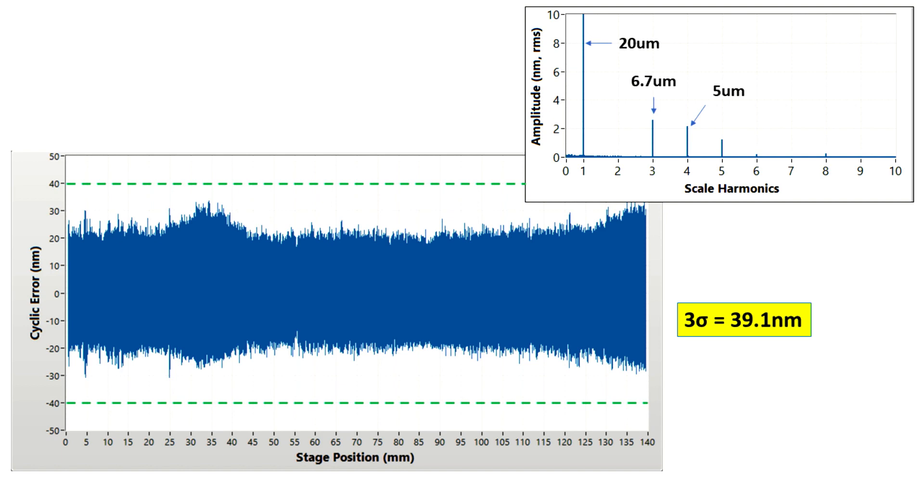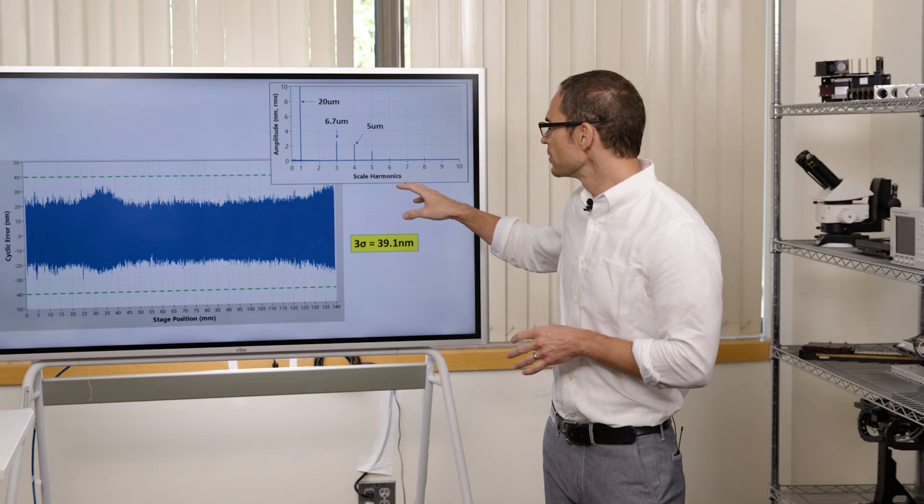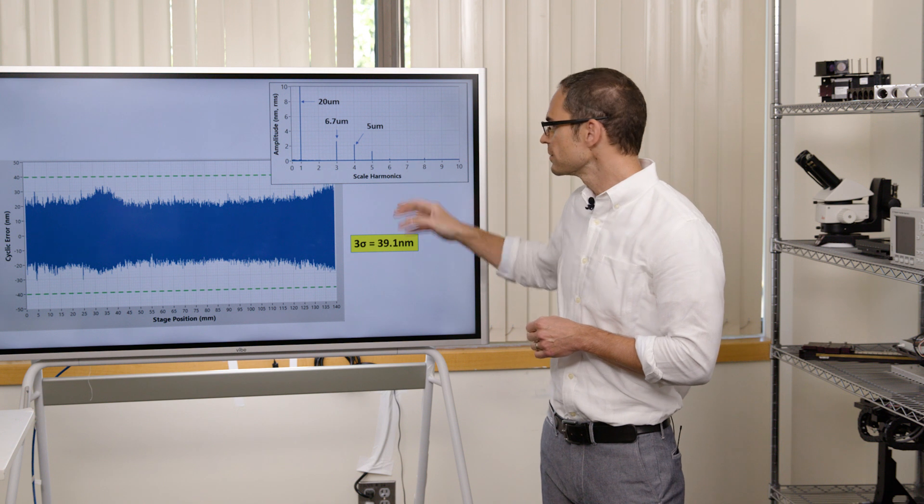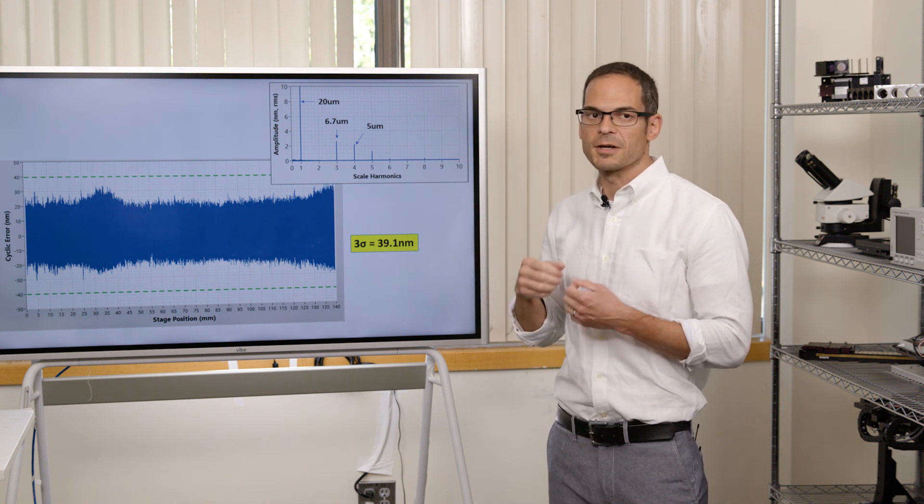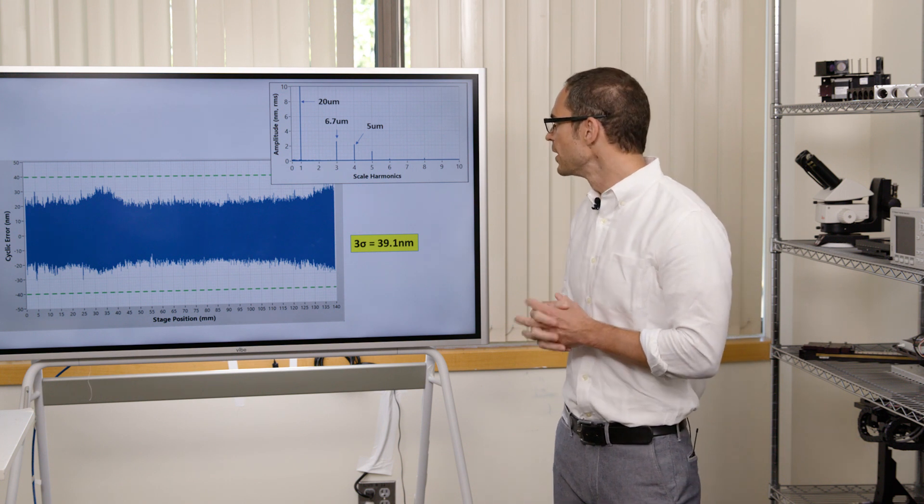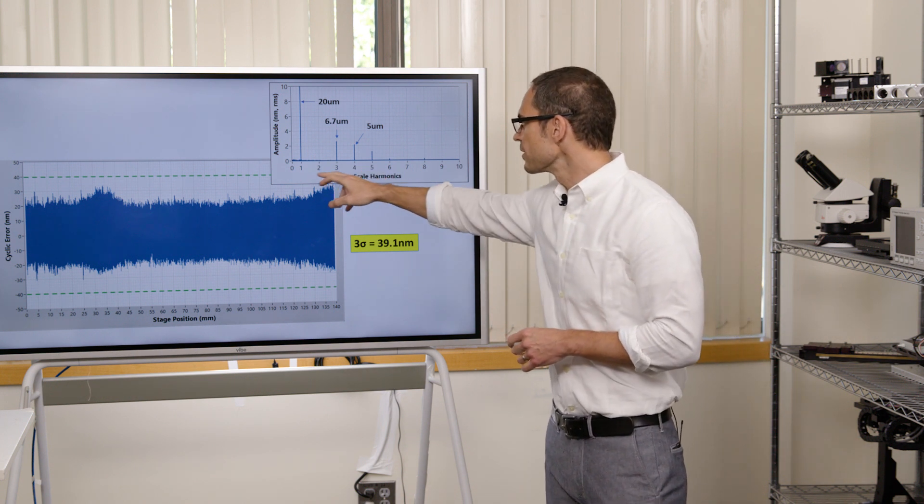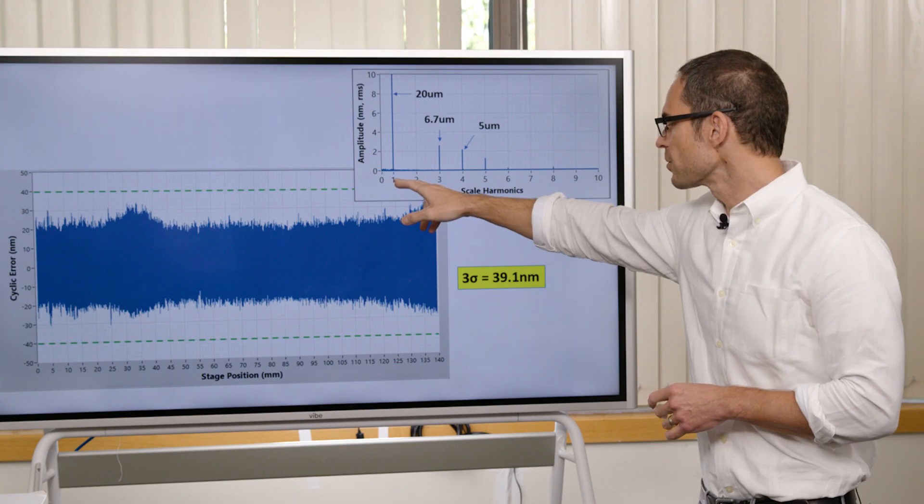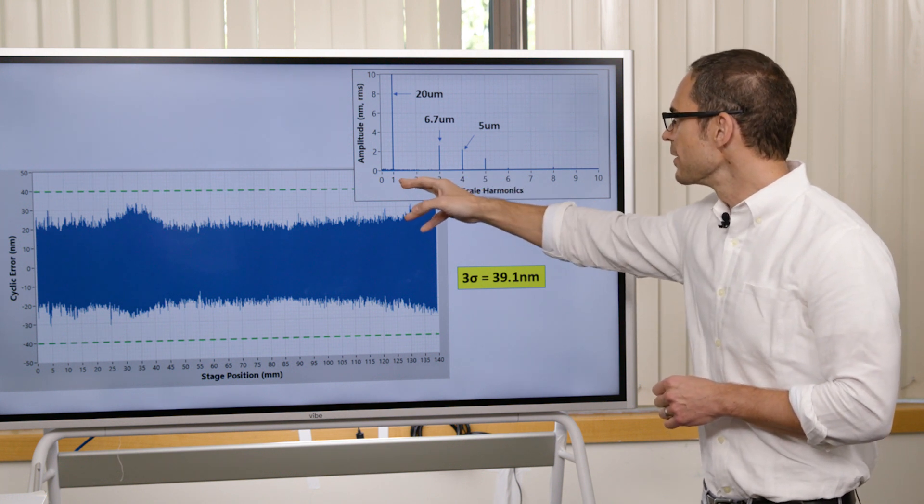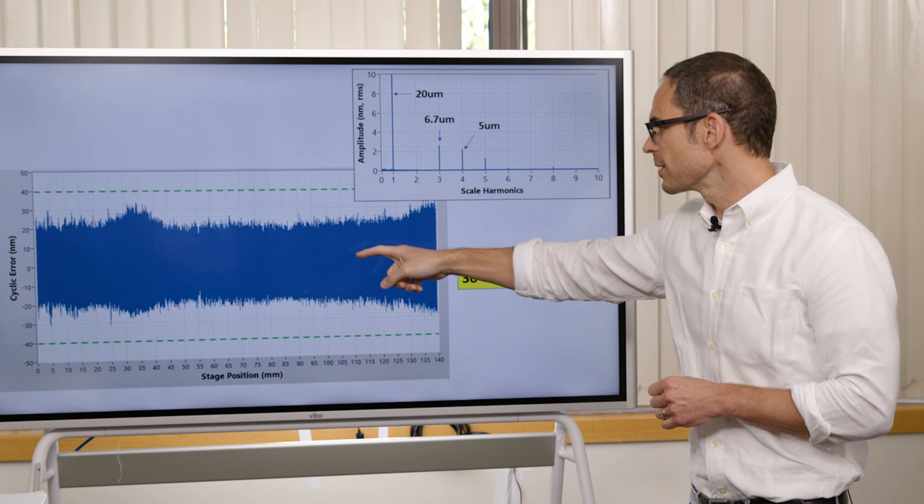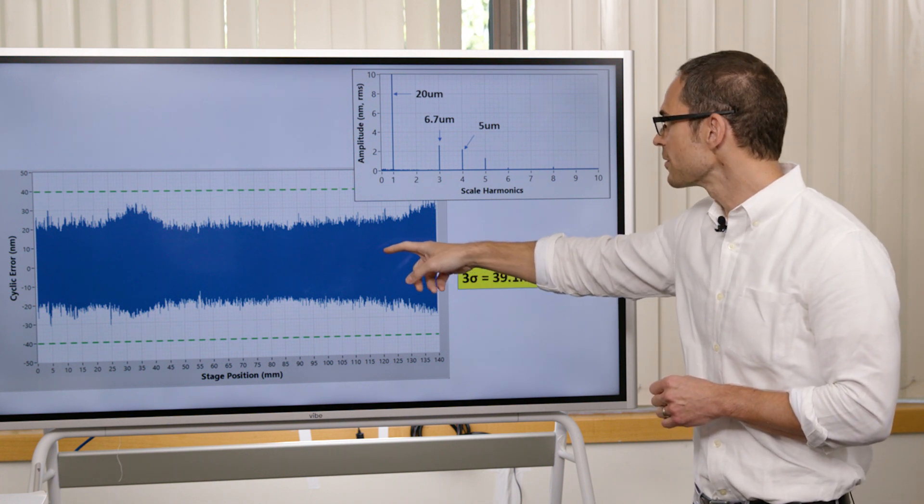So if you break it down into the harmonic components, whereas on the previous slide, I showed a single sine wave, double frequency sine wave, those are represented here, whereas this is the first order sine wave, this would be a third order, fourth order, and the amplitude to which they're contributing to this inaccuracy.